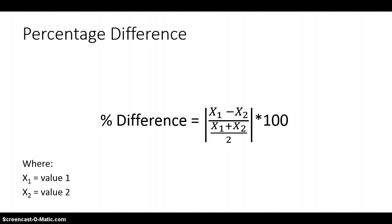Now let's look at percentage difference. Percentage difference is used when we don't have an accepted value and are simply comparing two values against each other — for example, one trial versus a second trial. We take x1 minus x2 in the numerator, divide by the average of x1 and x2 — which is (x1 + x2) divided by 2 — take the magnitude of that, and multiply by 100. Unlike percentage error, percentage difference is not an error; it's just a comparison between two values.